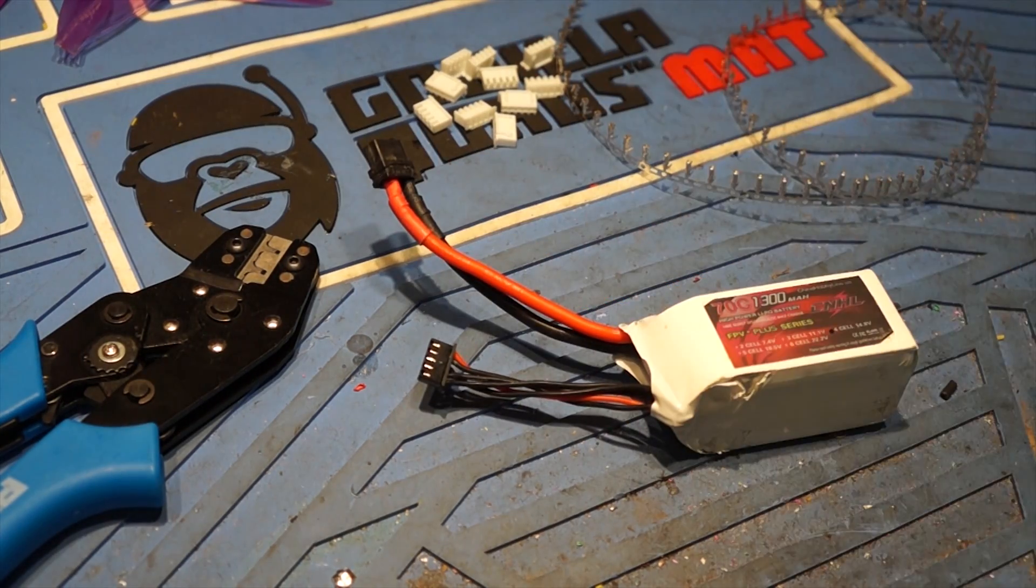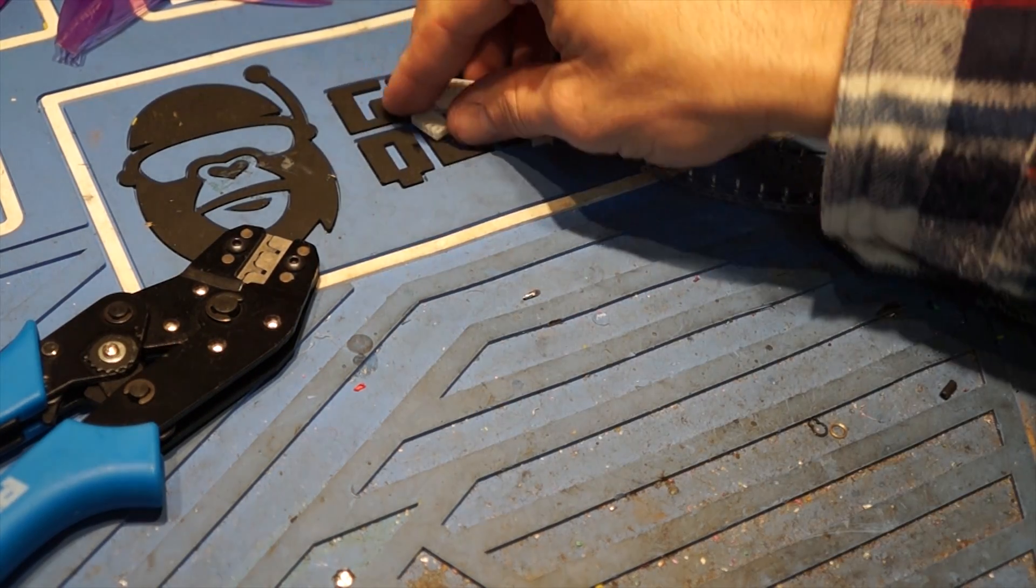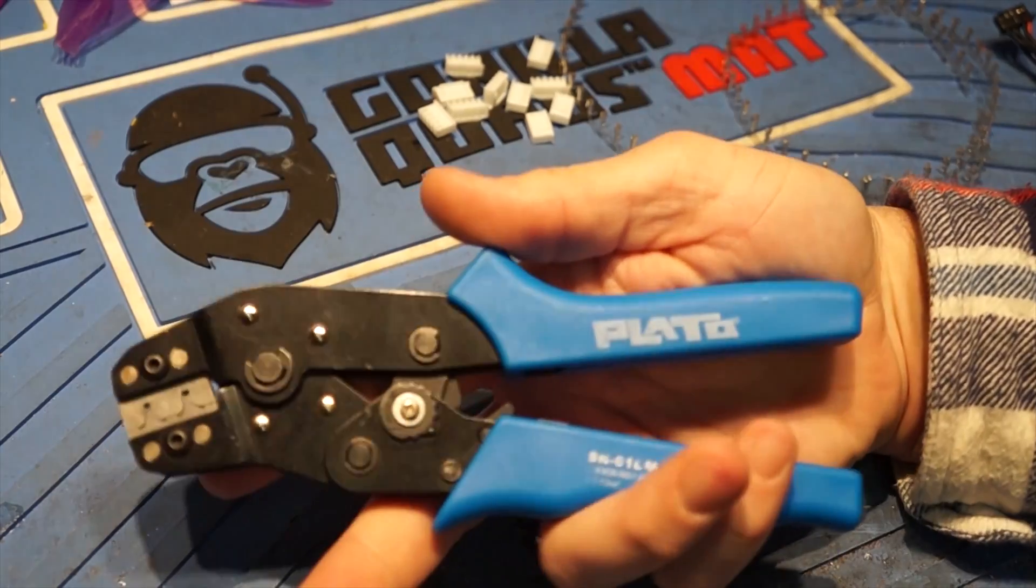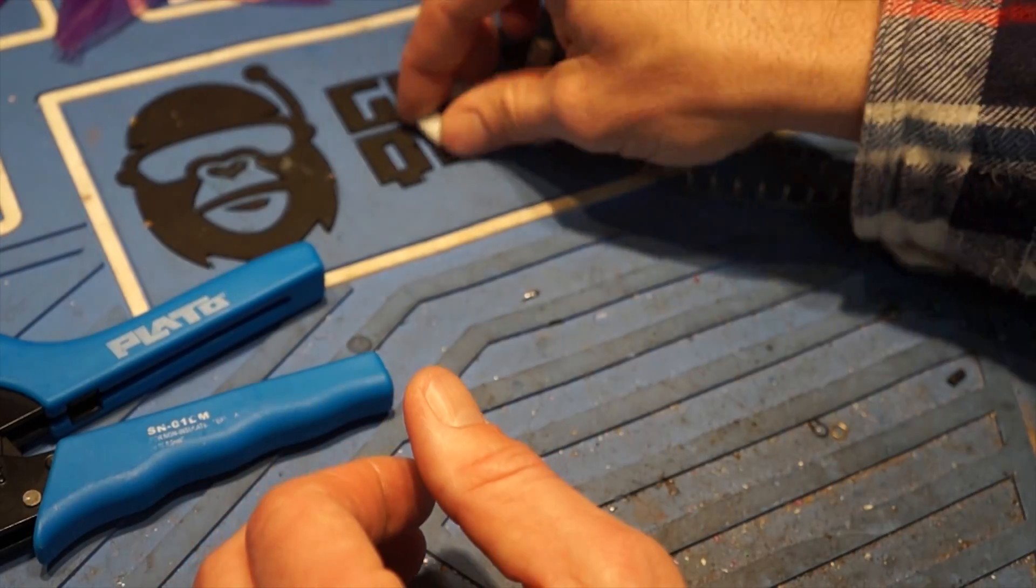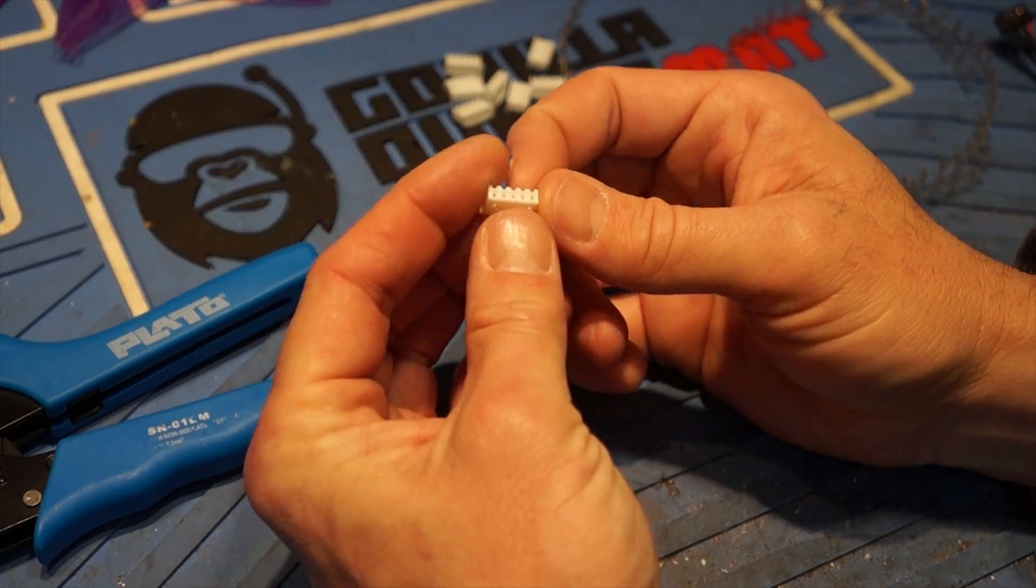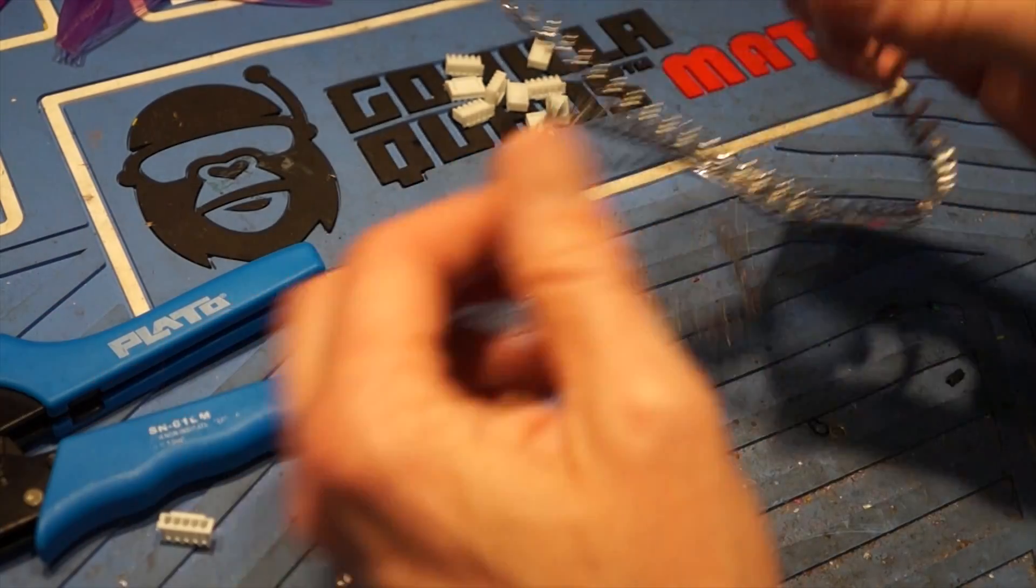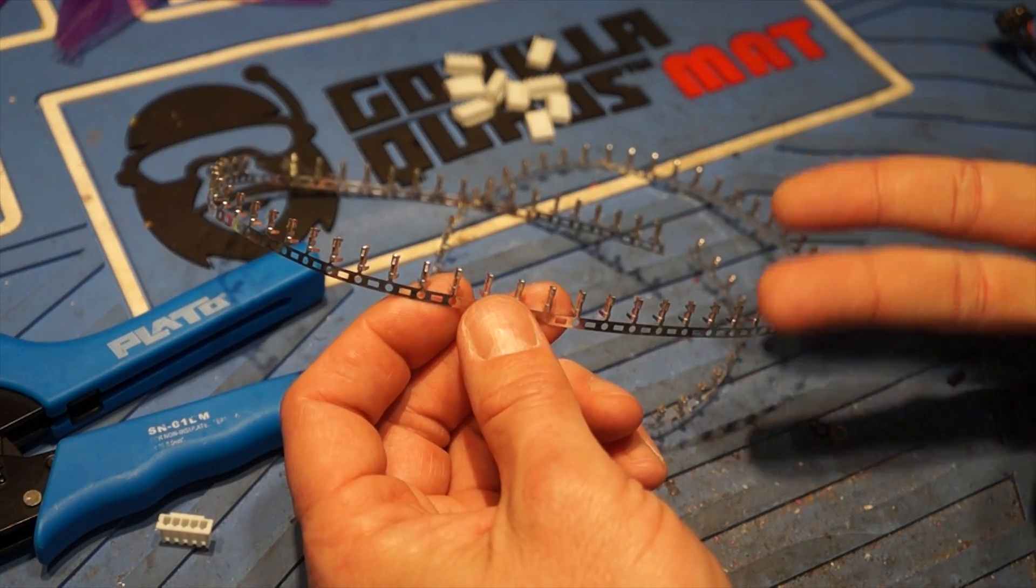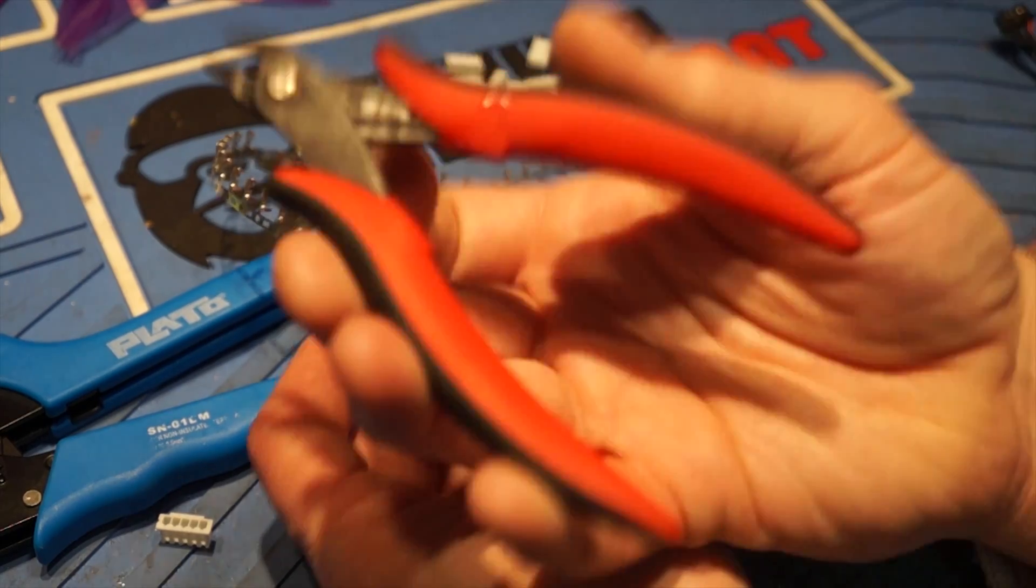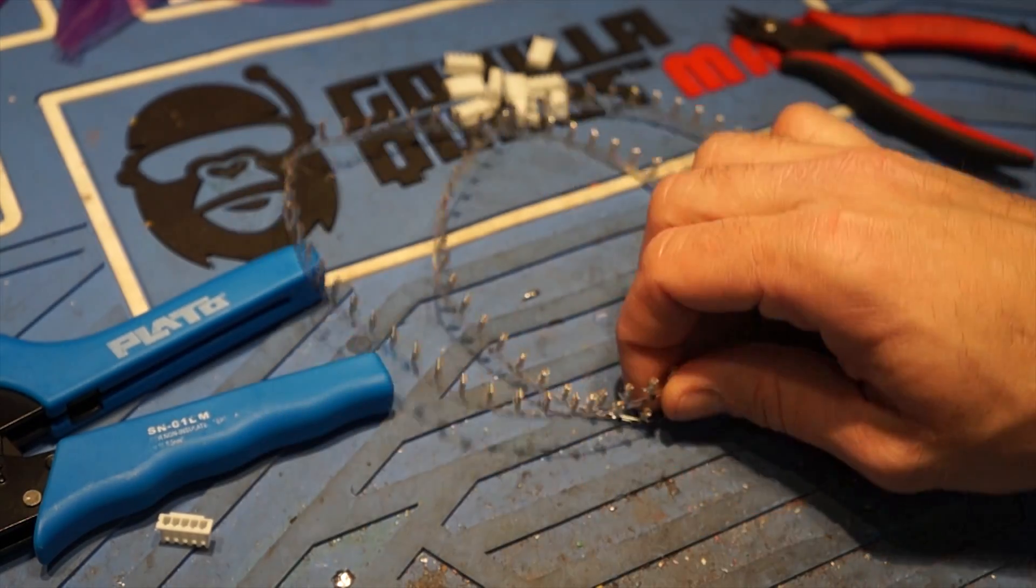Now what I wanted to cover with you is the things that you're going to need. So you're going to need a crimper, you're going to need your 4S balance plug, and you're also going to need pins. And you're going to need clippers of course, and then it's very helpful but you should already have it, is to have a meter.